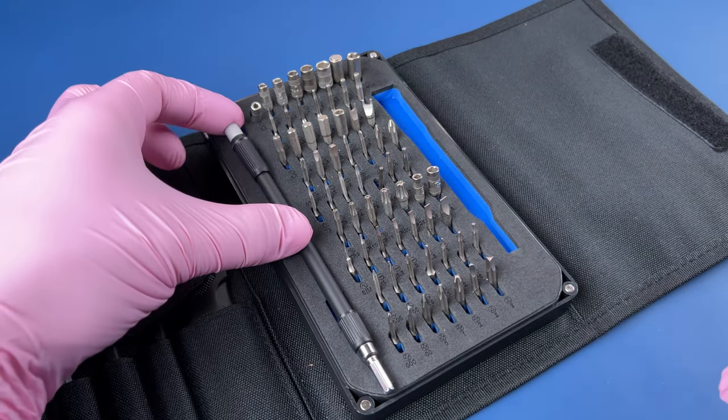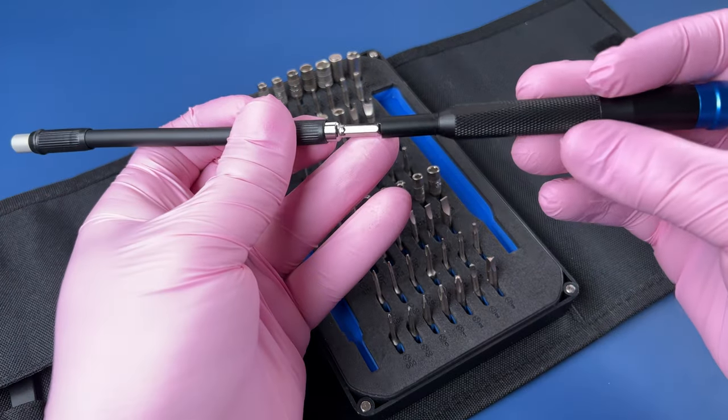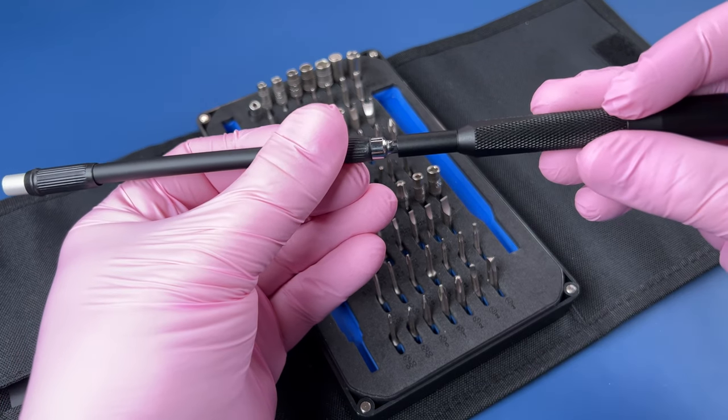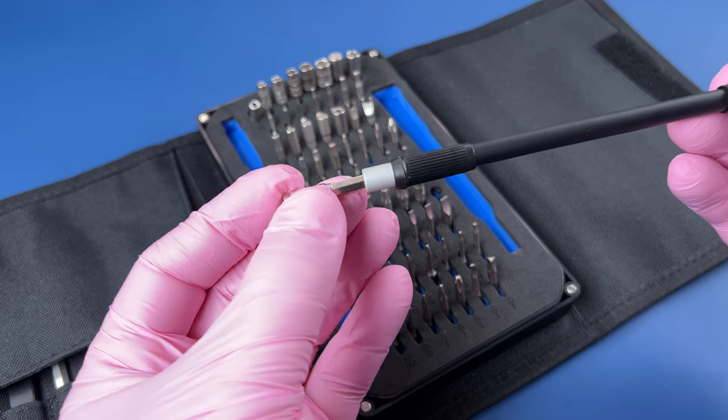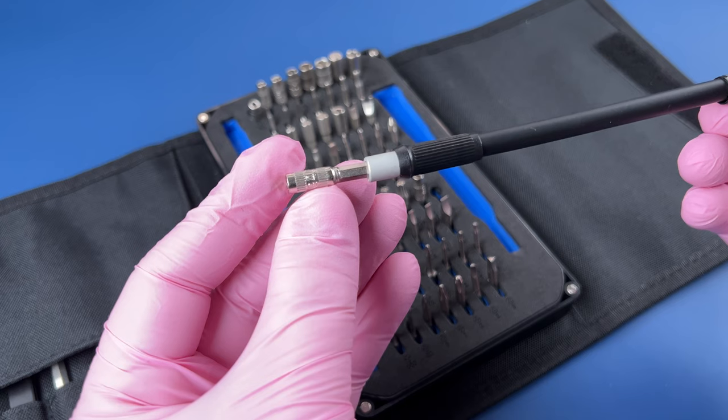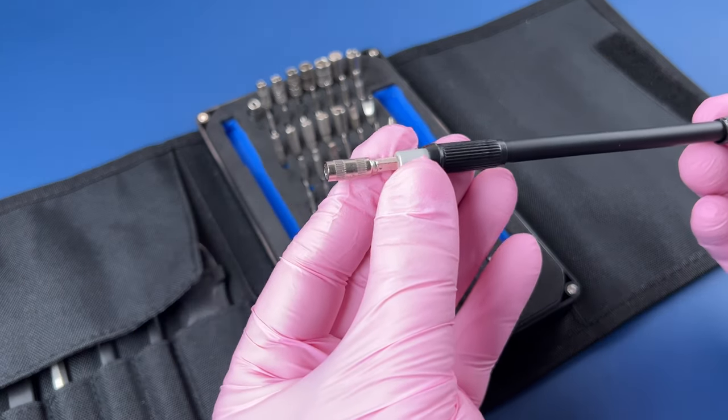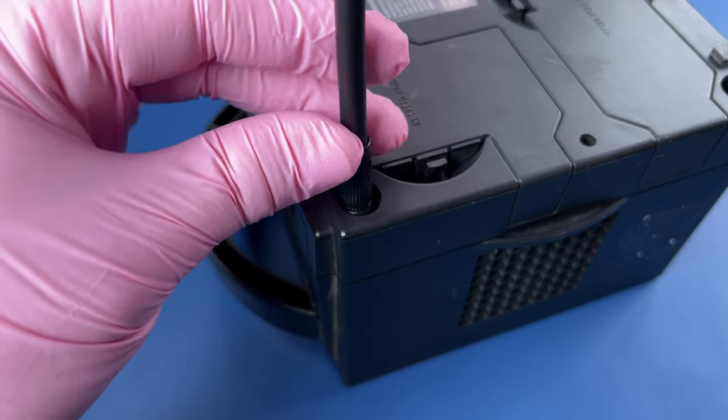Retro Nintendo consoles require a special bit in order to be able to get into them. So I'm using this G 4.5 bit out of my iFixit Pro Tech Toolkit and this extender in order to be able to get down inside of here.